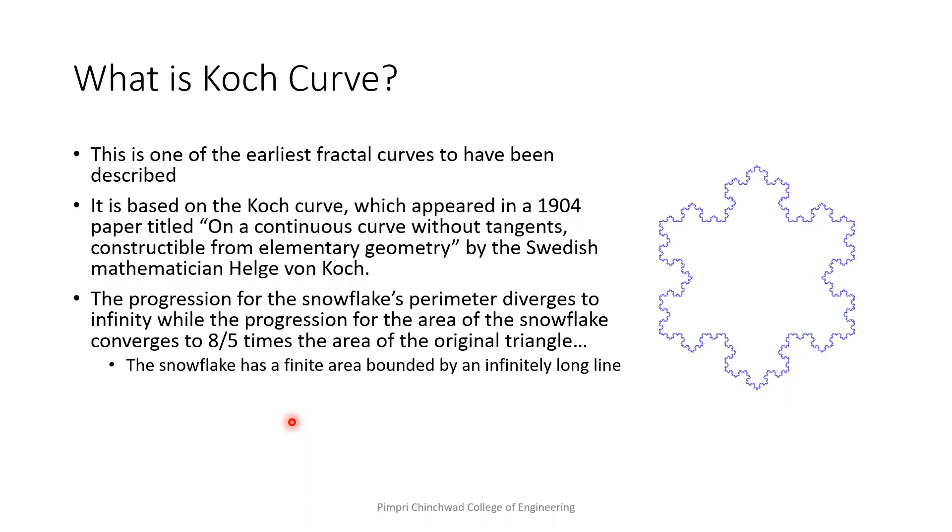So here we start with a regular triangle and then we perform some operations and finally we will get a shape like a snowflake. As you can understand, these portions we are continuously increasing the perimeter. So the progression for the snowflake's perimeter diverges to almost infinity.